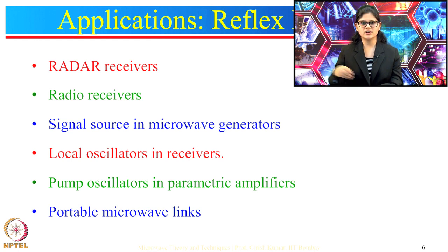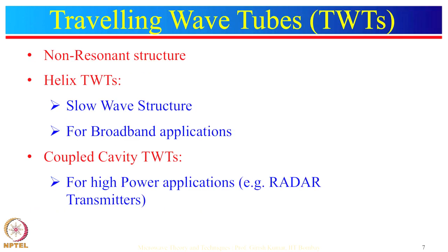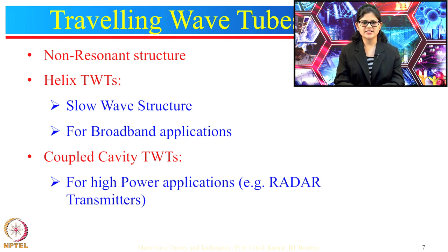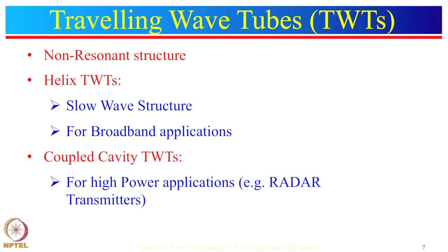Let us move on to the next microwave tube: the traveling wave tube. These microwave tubes are non-resonant structures and come in two types. First are helix traveling wave tubes, which are slow wave structures used for broadband applications. Second are coupled cavity traveling wave tubes, used for high power applications such as radar transmitters. Before looking into the helix traveling wave tube, let us first understand slow wave structures.